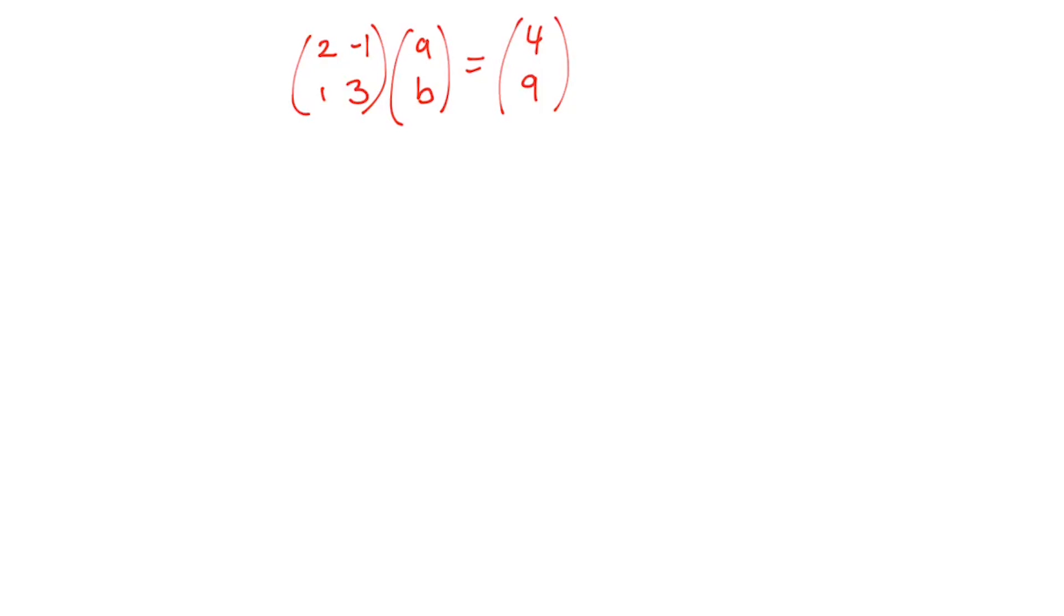If I want to find A, B, I can use two methods. I can multiply this row by the first column and put that equal to 4. That will give me an equation in terms of A and B, and I'll do it again, and I'll end up with a simultaneous equation. So if I'm going to end up with simultaneous equations and already found the inverse of this matrix, I might as well just solve this using the matrix method for simultaneous equations.